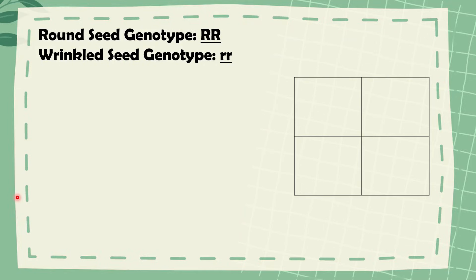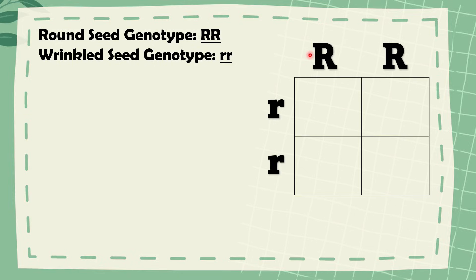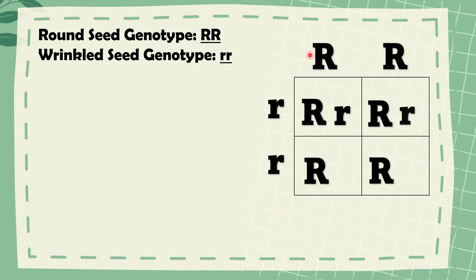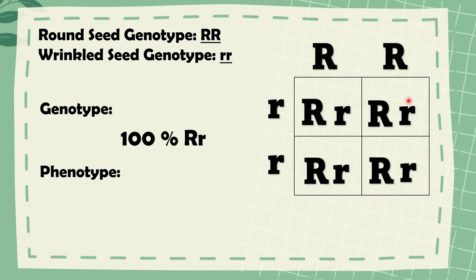First, let us have the genotype of the parents. We have the round seed genotype as dominant R and dominant R, and the wrinkled seed genotype as recessive R and recessive R. Here's our Punnett Square. Let us put the genotype of the round seed and the wrinkled seed, and then let's do the cross. Downward we have dominant R, and sideward we have recessive R. This is how you cross using a Punnett Square. Now let us determine the genotype. We have here 100% heterozygous — dominant R and recessive R. Take note that each box is equal to 25%, and as you can see, we all have dominant R and recessive R: 25 + 25 + 25 + 25 = 100% heterozygous dominant R and recessive R.